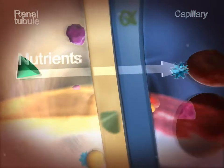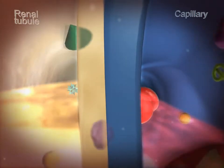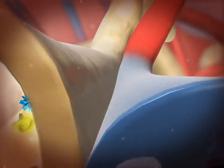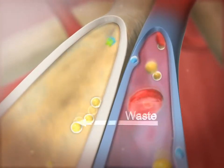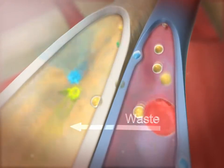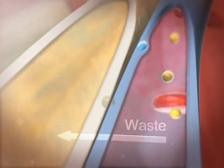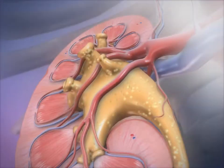glucose, amino acids, and proteins are reabsorbed into the body through cells along the tube wall. At the same time, additional waste ions and hydrogen ions still in the blood pass from capillaries into the renal tubule. This process is called secretion.